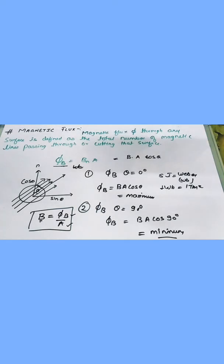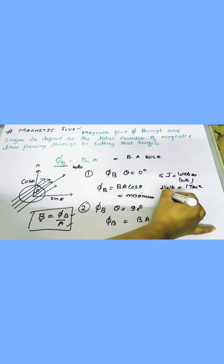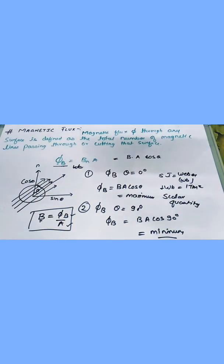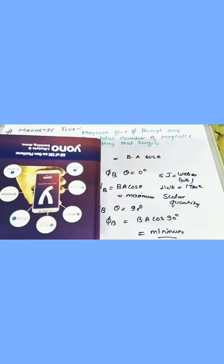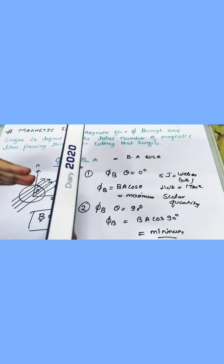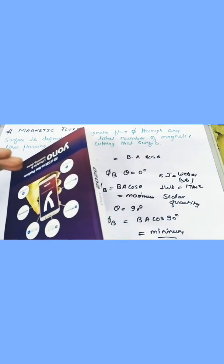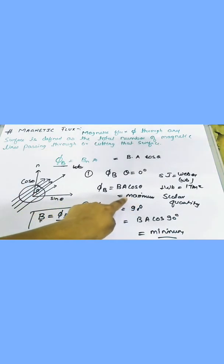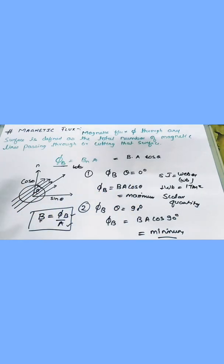Magnetic flux is a scalar quantity. I hope this is clear. For example, take this diary — if this is the field line and this is also perpendicular, you can find the maximum lines can pass through it. When the number of magnetic field lines is maximum, the theta will be zero degrees. So this is all about magnetic flux. Thank you.